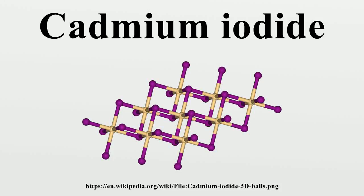Cadmium iodide, CdI2, is a chemical compound of cadmium and iodine. It is notable for its crystal structure, which is typical for compounds of the form MX2 with strong polarization effects.